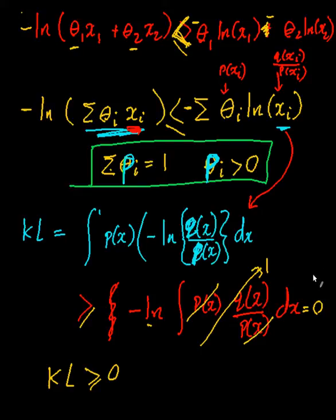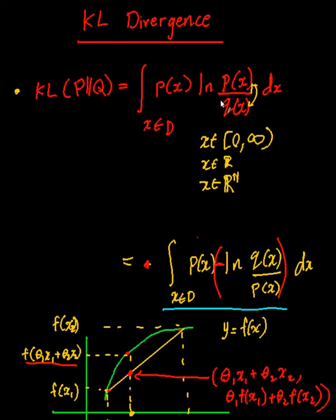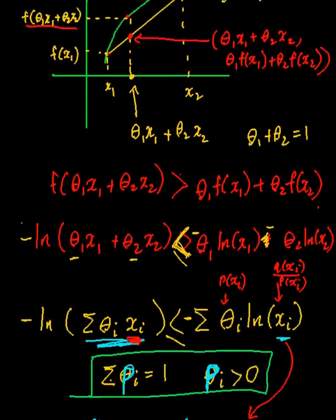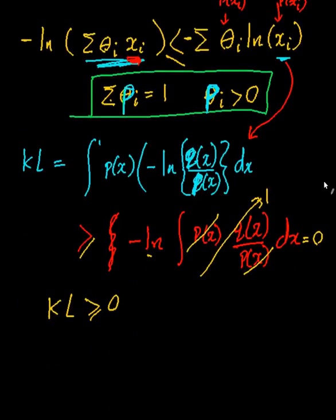One last comment: the KL divergence is not a symmetric distance metric. It focuses more on P(x), showing the distance from Q(x) to P(x). KL(P||Q) is not the same as KL(Q||P) — these two are not equal. That's it for the positivity proof. In the next video I'll go through some examples, maybe looking at Gaussians to compare them. If you have any questions or comments please let me know, and thanks for watching.